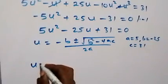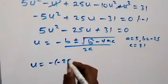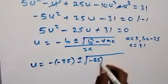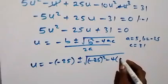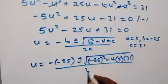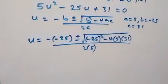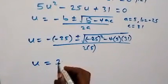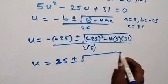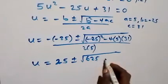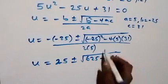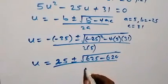Applying the quadratic formula: u equals minus (minus 25) plus or minus the square root of (minus 25) squared minus 4 times 5 times 31, all over 2 times 5. Simplifying the discriminant: 625 minus 620 equals 5, and the denominator is 10.